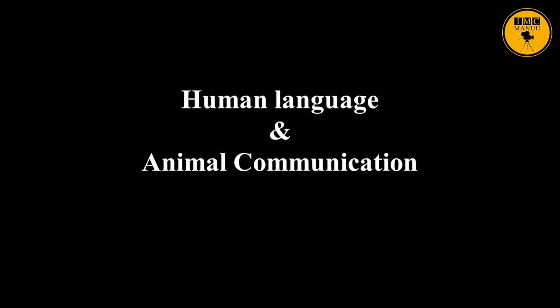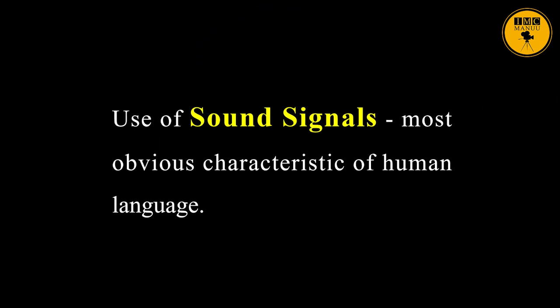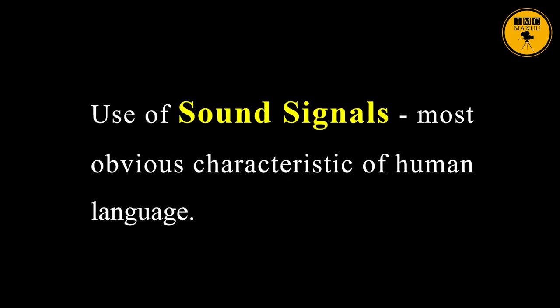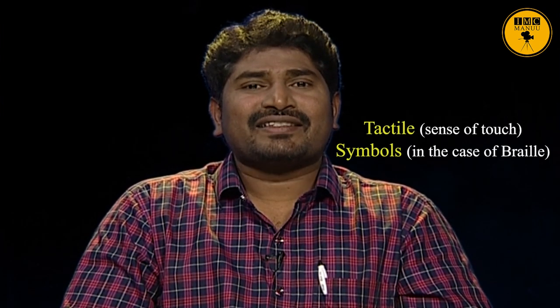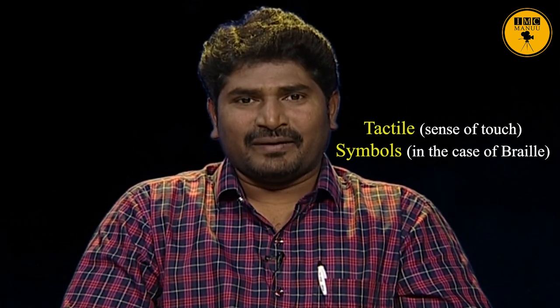Let us compare the difference between human language and animal communication. First, the use of sound signals is the most obvious characteristic of human language, but it is not unique because animals also use sounds for communication. Human beings can transfer language to visual symbols — examples like sign language or writing — and also tactile symbols, as in the case of Braille. Another important feature that differentiates human language from animal communication is arbitrariness.